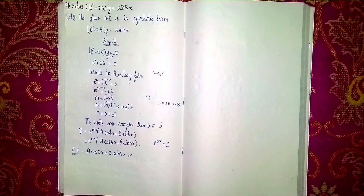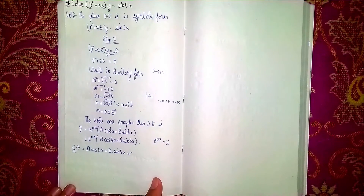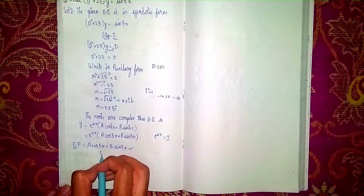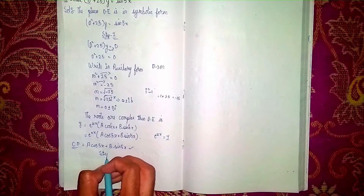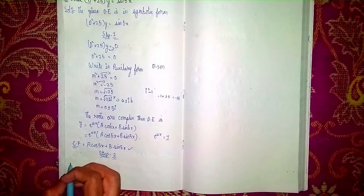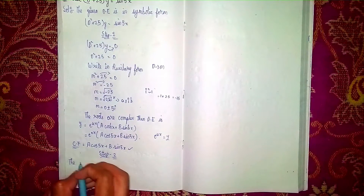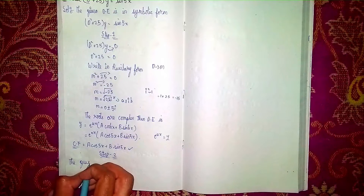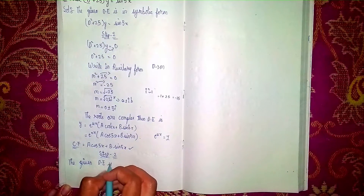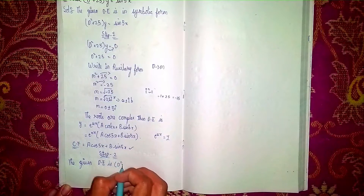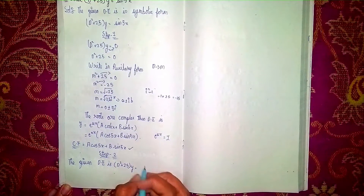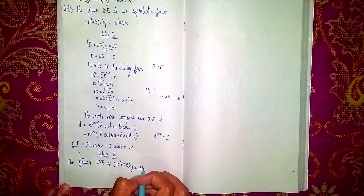Step 2: to find the particular integral. The given differential equation is D squared plus 25 into y equals sin(5x).